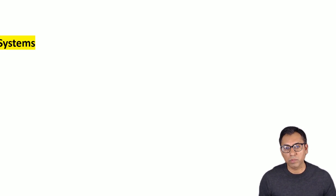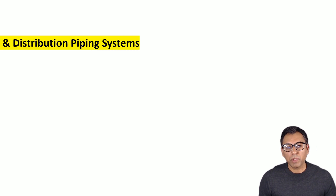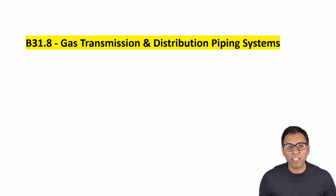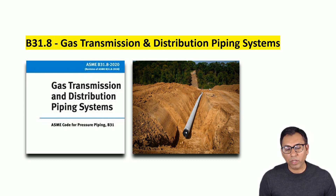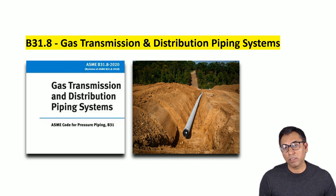The next chapter is B31.8, which is Gas Transmission and Distribution Piping Systems. ASME B31.8 covers gas transmission and distribution piping systems including gas pipelines, gas compressor stations, gas metering and regulation stations, gas mains, and service lines up to the outlet of the customer meter set assembly.